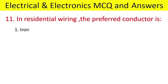In residential wiring, the preferred conductor is: iron, aluminium, copper, silver. Answer: copper.